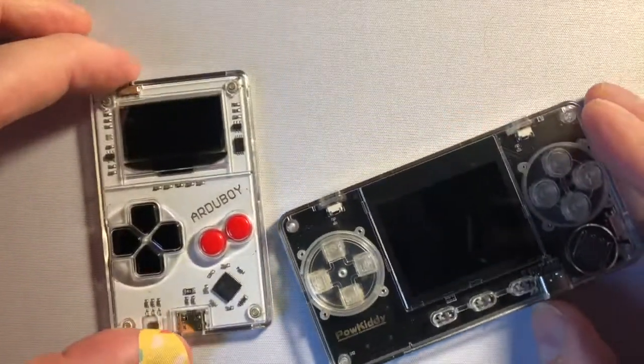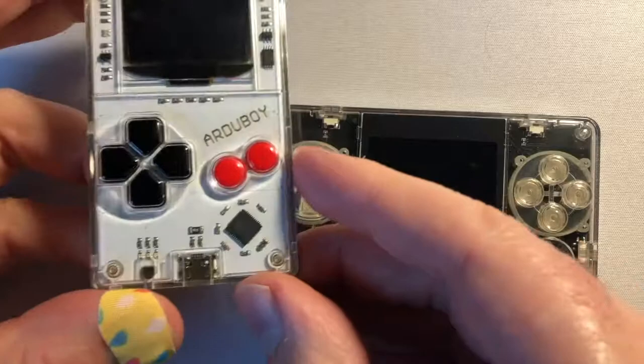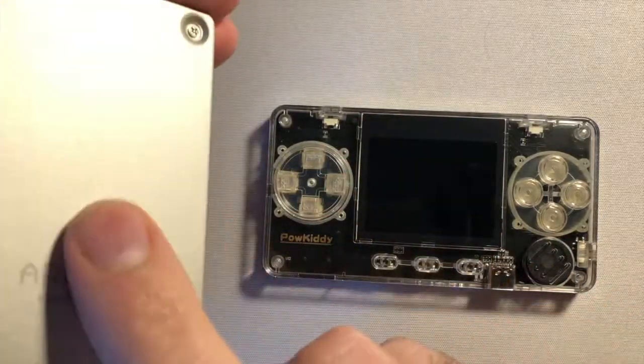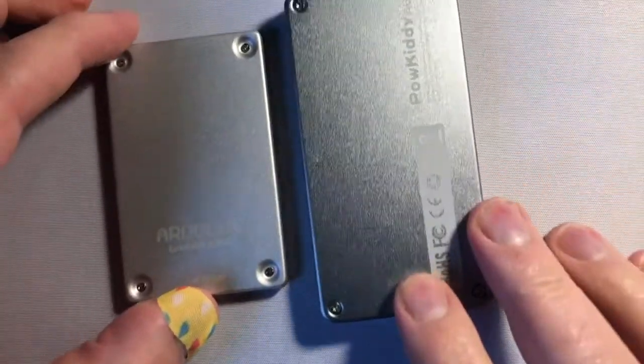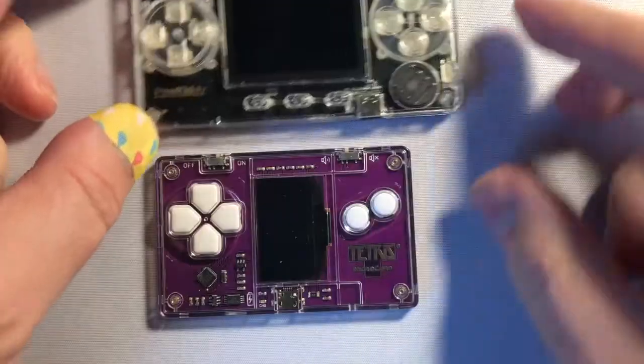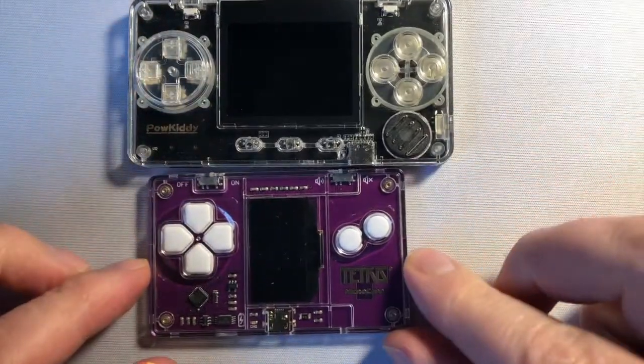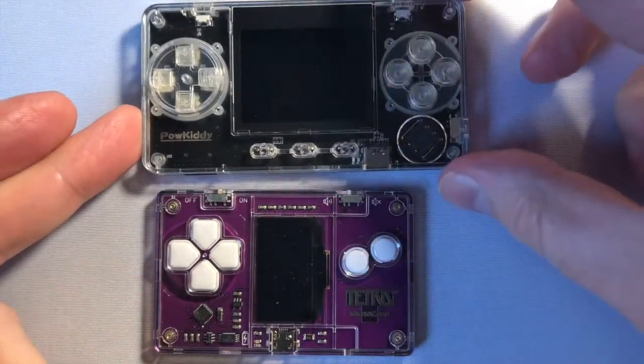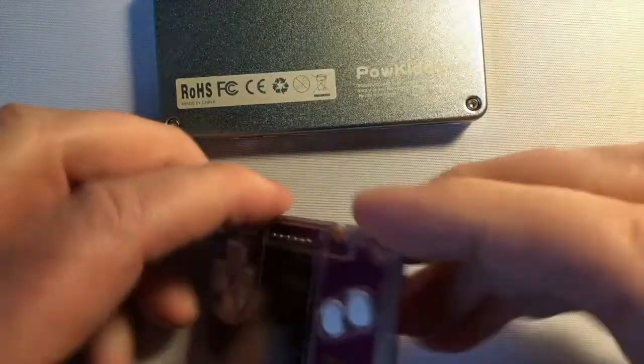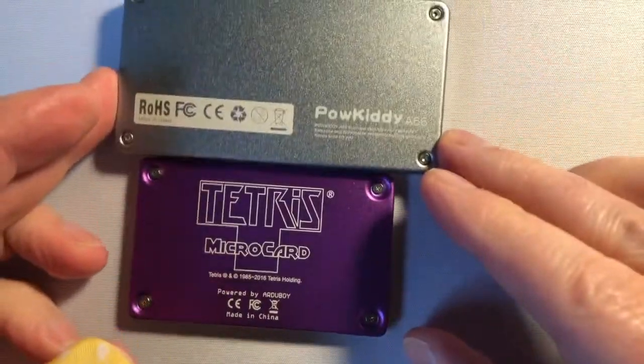I can show that now. So you got kind of the same thing. The Art of Boy, this one looks a little bit different, but this is Art of Boy. Same thing. Aluminum back. Aluminum back's a little bit bigger. You got the Tetris. So you can see it looks very similar, I think.